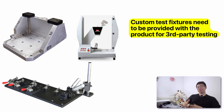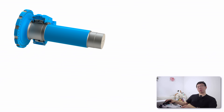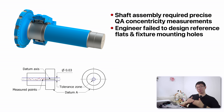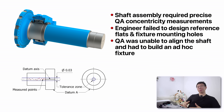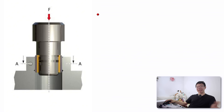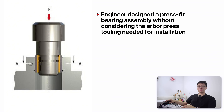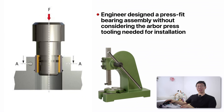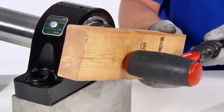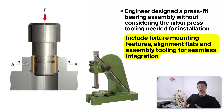Other situations that might require fixtures or jigs is during QA. When designing a shaft assembly requiring precise concentricity measurements during QA, the engineer failed to design reference flats or fixture mounting holes, and when the part arrived, QA couldn't align it accurately without building an ad-hoc fixture, which delayed validation by two weeks and added unplanned costs. In another case, an engineer designed a press-fit bearing without considering the arbor press tooling needed for installation. Operators then resorted to hammering the bearings in place, damaging the housing and bearing. Always include fixture mounting features, alignment flats, and assembly tooling to ensure seamless downstream integration. By the way, these are all real stories.